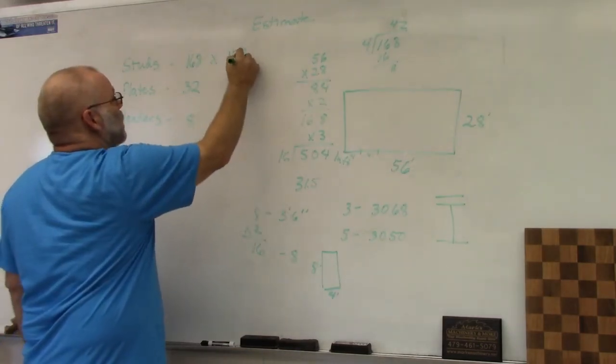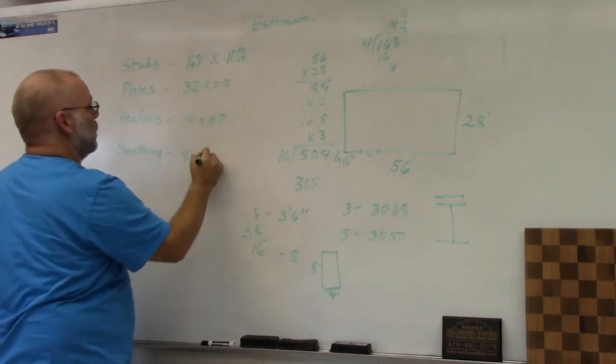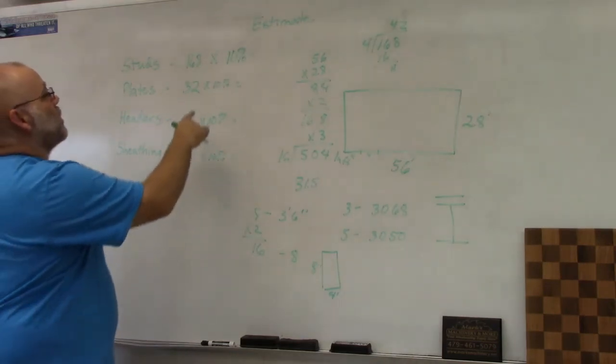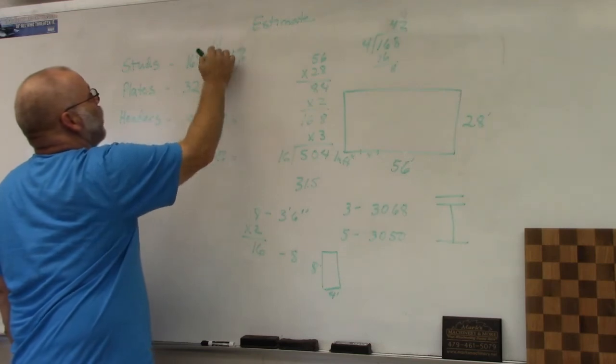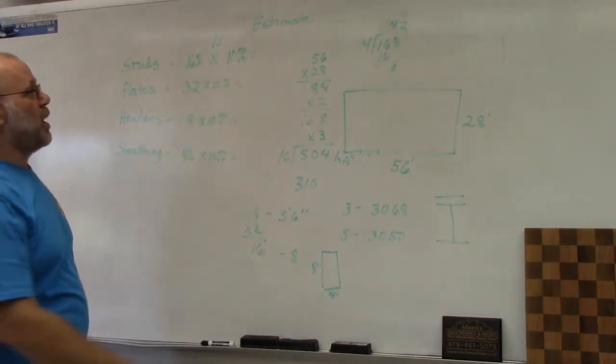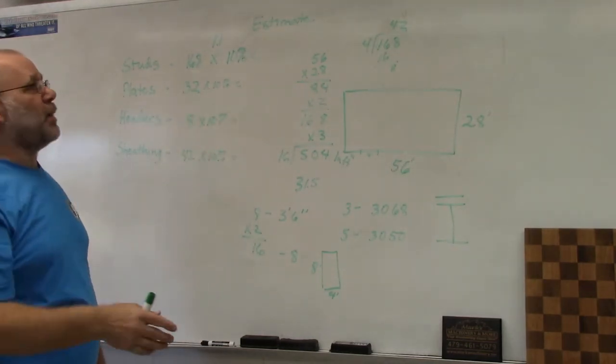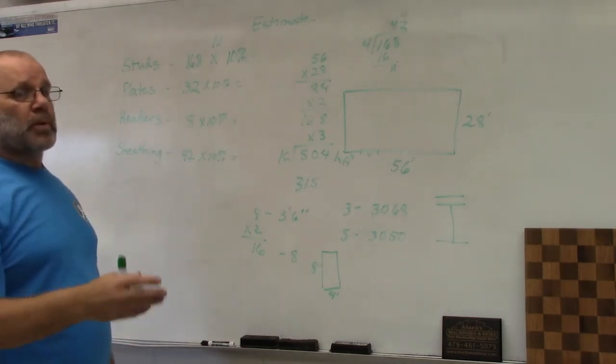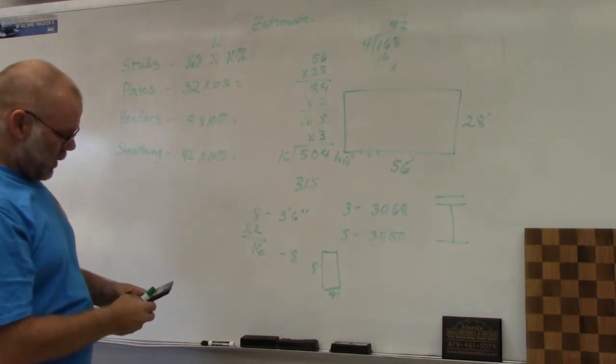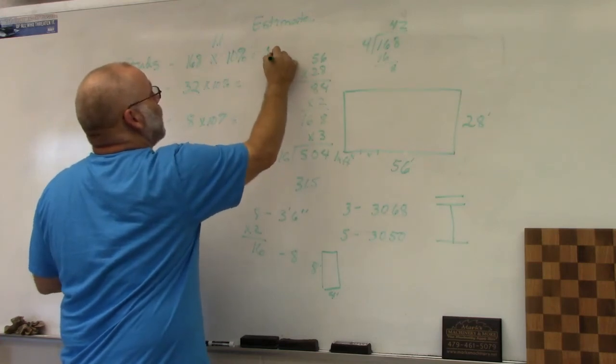We're going to multiply this times 10%. How do we multiply this? It's pretty simple: you multiply the number 168 times 1.1. The 1 will be for the 168, and 0.1 will be the percentage. If I want 15% it would be 1.15, if I wanted 20% it'd be 1.2. If I take 168 times 1.1, I get 184.8 rounded up to 185.